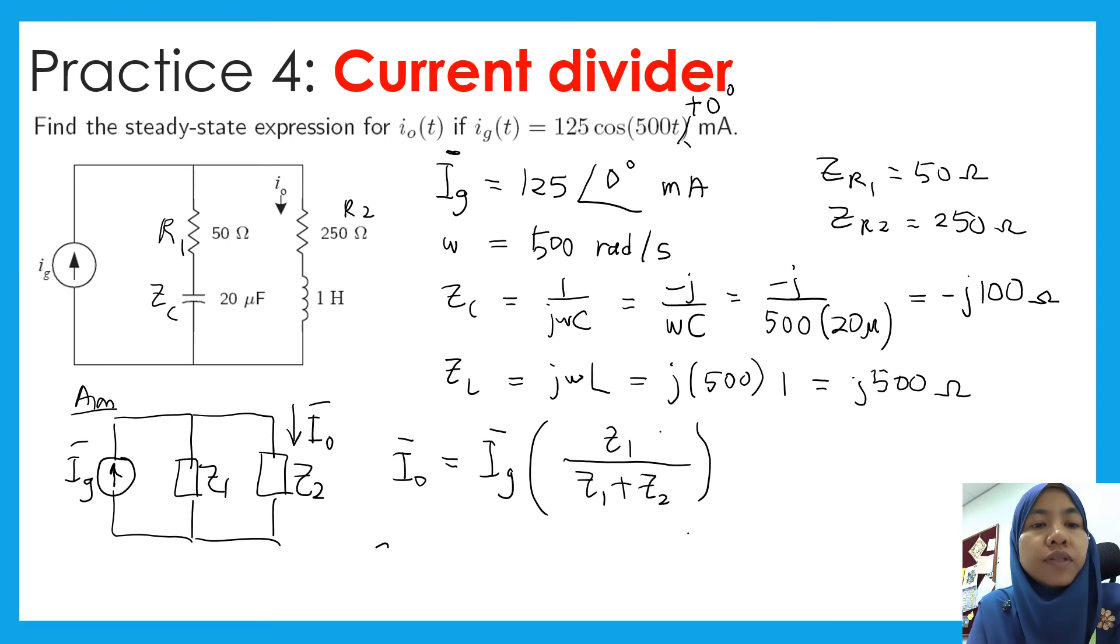Since impedance of R1 and impedance of C are in series, so you can sum up these two. So this is equal to 50 minus j100. And then the second one, 250 ohms is in series with that inductor 1H, 1 Henry. So 250 plus j500 is actually equal to impedance of 2. So you substitute these values, then you can get the answer.